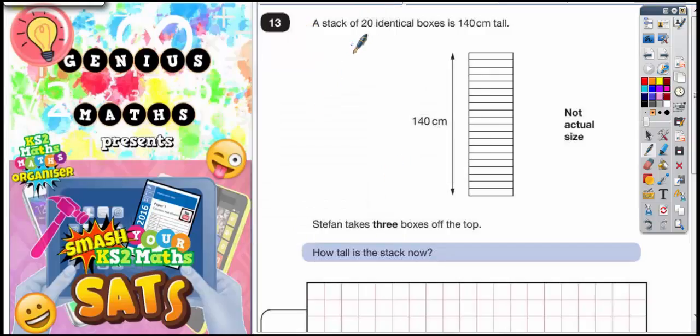Question 13. A stack of 20 identical boxes, which is these boxes here, is 140cm tall. Stefan takes 3 boxes off the top. How tall is the stack now?